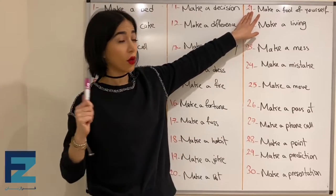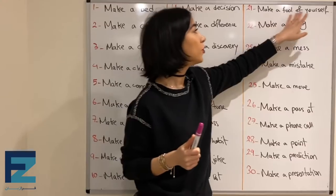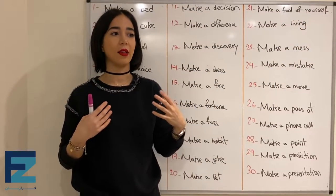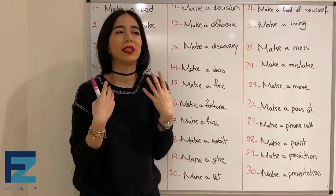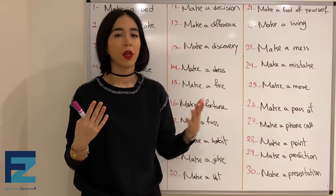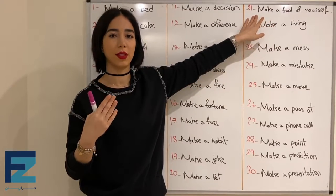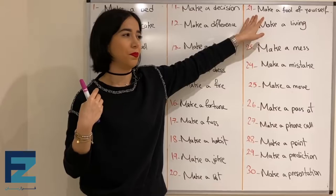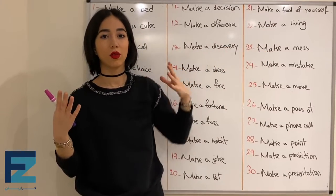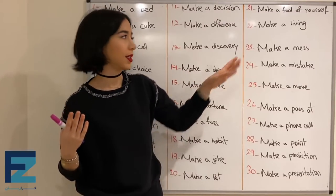Number twenty-one: make a fool of yourself. This means to do something that makes you seem or look stupid or foolish. Don't make a fool of yourself — اینقدر خودتو جلوی دیگران خنگ و احمق جلوه نده.